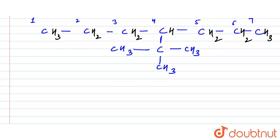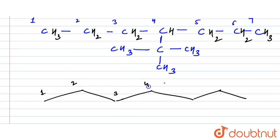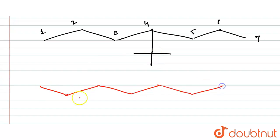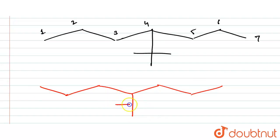Now for the bond line structure: we draw the seven-carbon chain — positions 1 through 7. At the fourth position we attach the tertiary butyl group in bond line notation. This gives us the complete bond line representation of 4-tertiary butyl heptane.